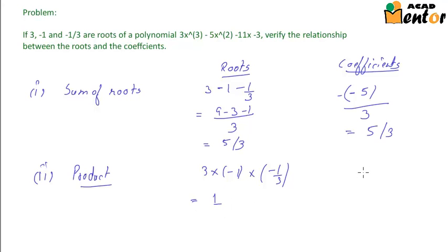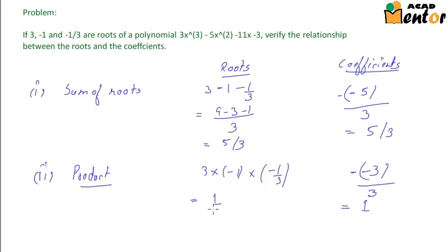Using the coefficients, the product formula is minus the constant term divided by the coefficient of x³, so minus of minus 3 divided by 3, which gives 1. We get the same answer using both the roots and the coefficients. Now let's verify the product of roots taken two at a time.